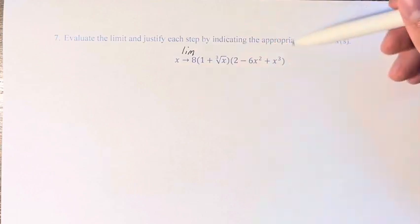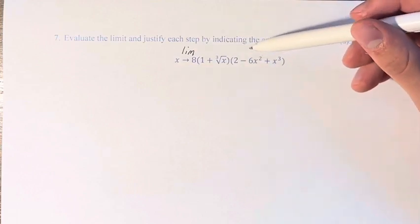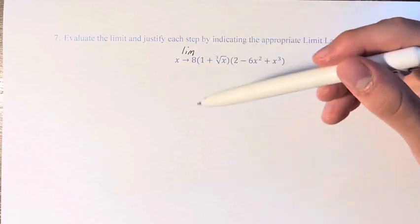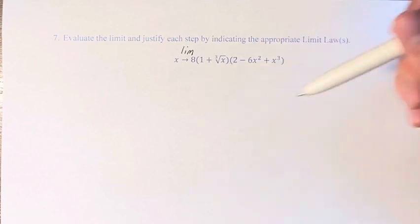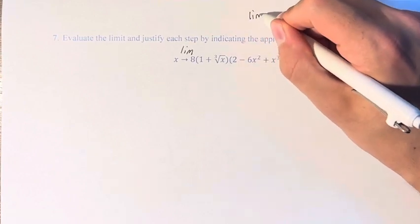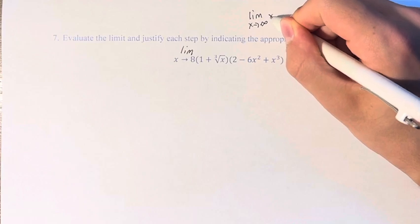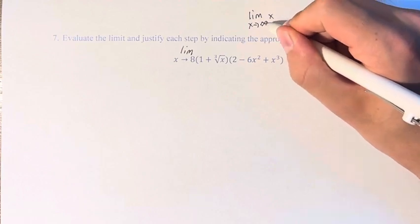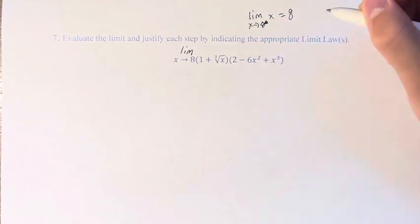What we're going to do is turn this into a product — or addition, subtraction, division, whatever — of a bunch of individual limits as x approaches 8 of x, which we know is 8.